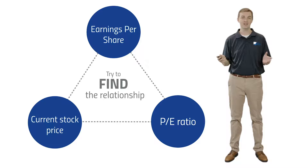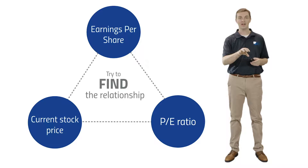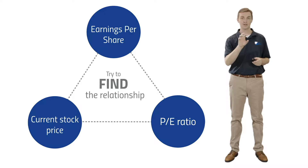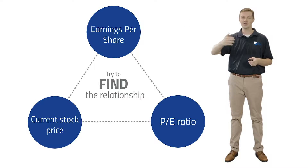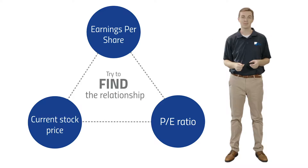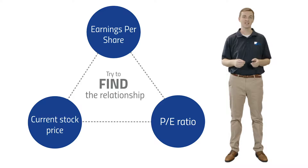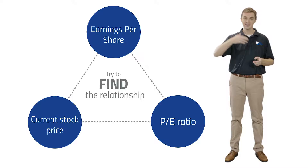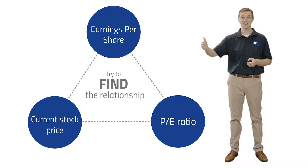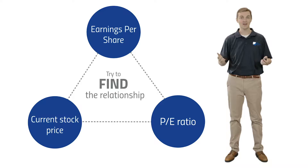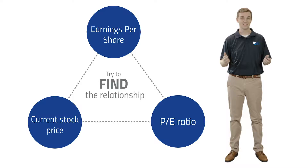Another way to think about the P/E ratio is: if you're buying $1 of earnings, how many years of that earnings do you have to receive before you get your money back? If the P/E ratio is 10 times, at those current earnings it would take 10 years to get all the money you invested back — or 10 years for those profits to match the stock price. That's why we say a P/E ratio is 10x.